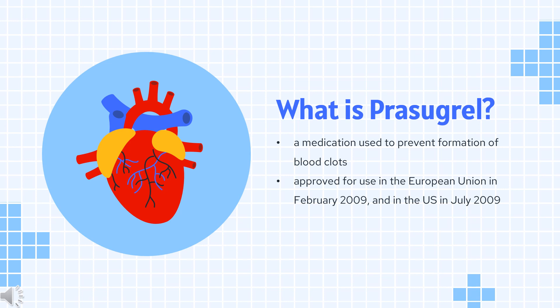Prasugrel was approved for use in the European Union in February 2009 and in the US in July 2009 for the reduction of thrombotic cardiovascular events, including stent thrombosis, in people with acute coronary syndrome (ACS) who are to be managed with percutaneous coronary intervention (PCI).